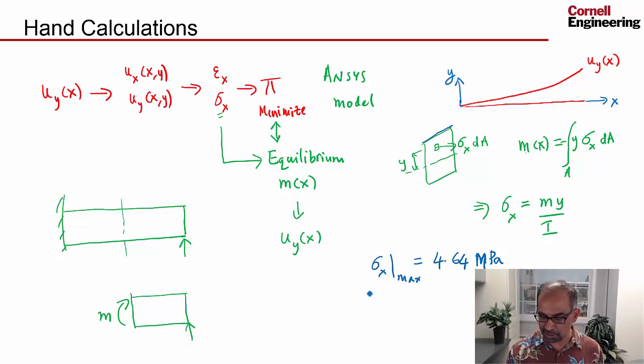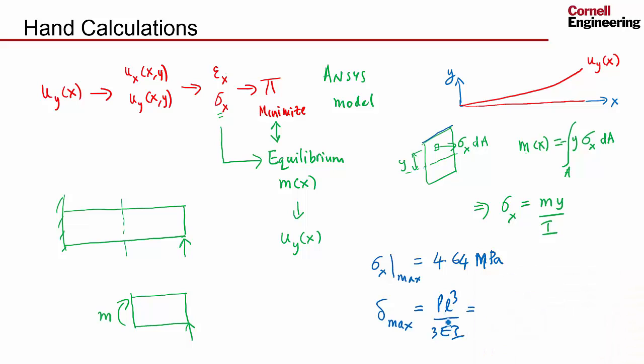The other value we can check is the maximum deflection here. From this relationship, one can also get what the maximum deflection is, and that comes out to be PL³/3EI, which works out to be 5.10 millimeters.